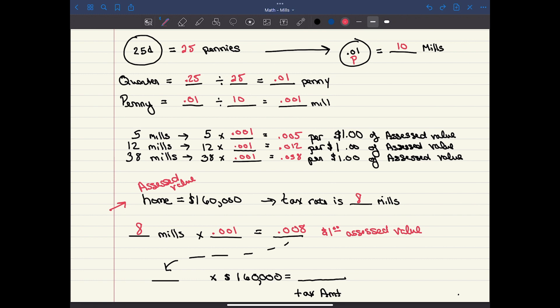Doing that math, that means we're going to pay 0.008 for every $1 value, which is going to be 160 times, and that's going to give us a tax amount of $1,280. That would be the answer to the problem.